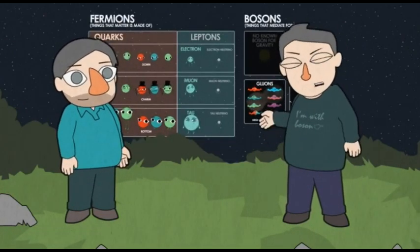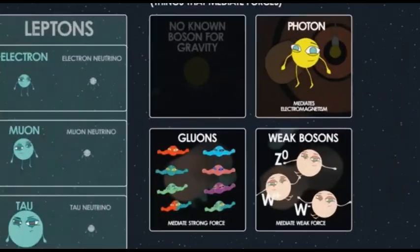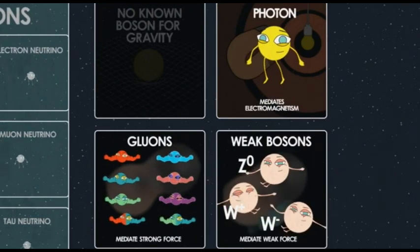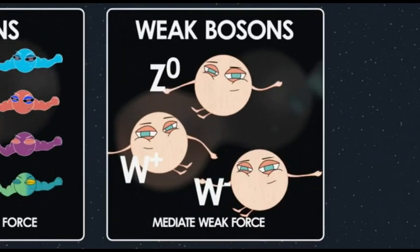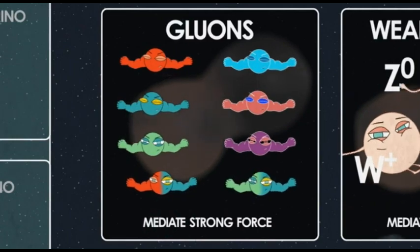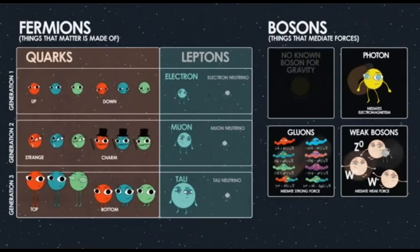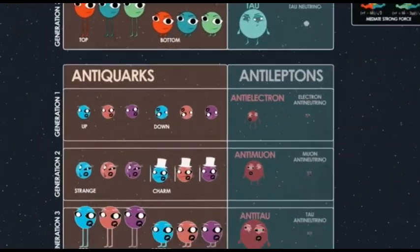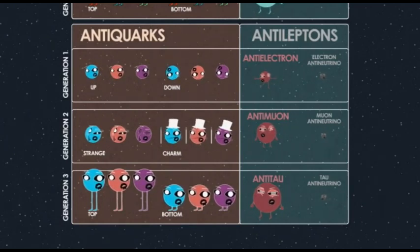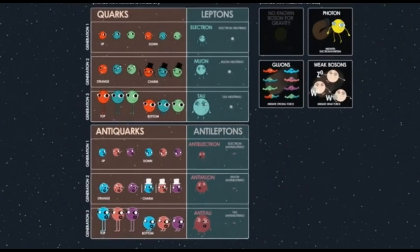Some particles are their own anti-partner — like photons. Some we've already accounted for: the W-plus is the anti-partner of the W-minus, and the gluons are already taken care of — that's part of why there are eight of them. But all the other particles have anti-partners, so there aren't 18 quarks — there are 36 quarks.